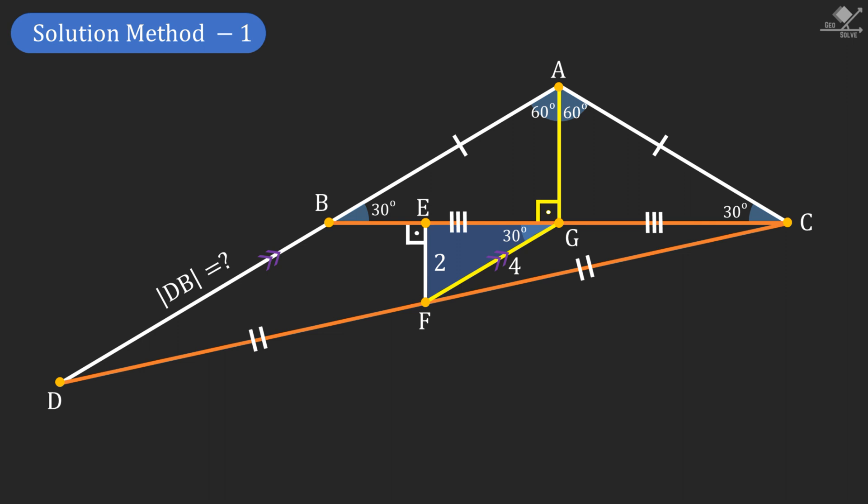Now if we focus on this shaded triangle, you will see that triangle CGF and CBD are similar. Therefore line segment DB can be calculated as 8 units. And that will be our answer.